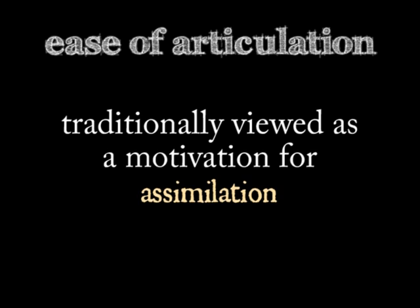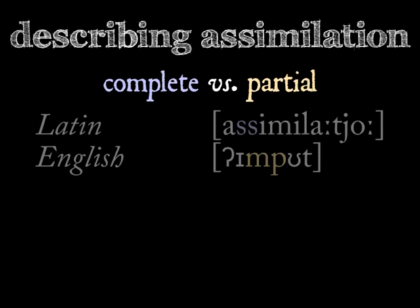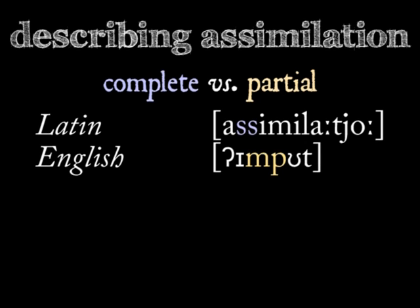There are different types of assimilation. Does the assimilating sound take on every feature of the phoneme that triggered assimilation? If so, the assimilation is complete. If it only takes on some of — or even just one of — the features, that's only a partial assimilation. The assimilation in the Latin 'assimilatio' is complete.